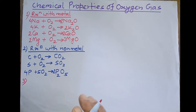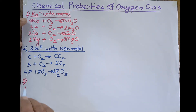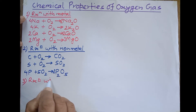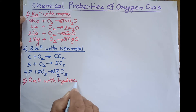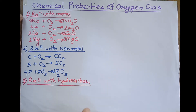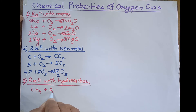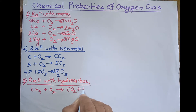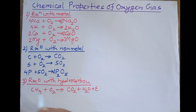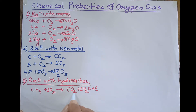Hydrocarbons also come under the chemical properties of oxygen. Hydrocarbons burn in air and form carbon dioxide, water, and heat energy. For example, methane (CH₄) burns in air with a bright flame and forms carbon dioxide and water, and a lot of heat energy is also produced. We can balance this equation: placing 2 before H₂O gives 4 hydrogen, and then 2 oxygen molecules on the left balances the equation.